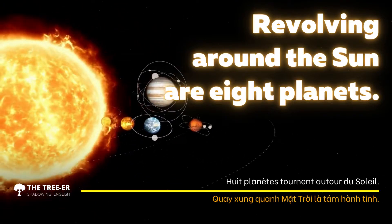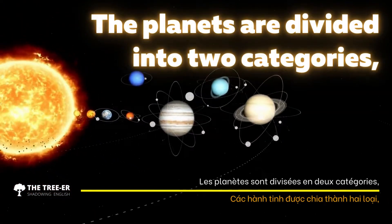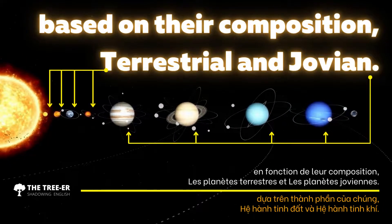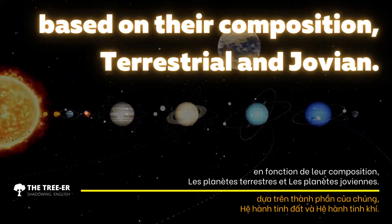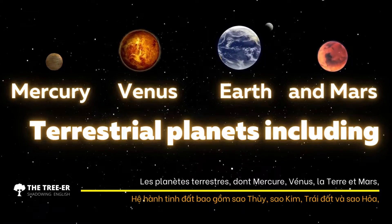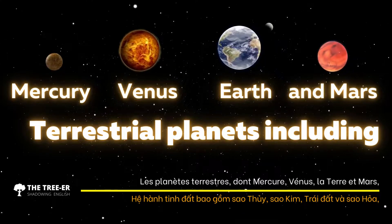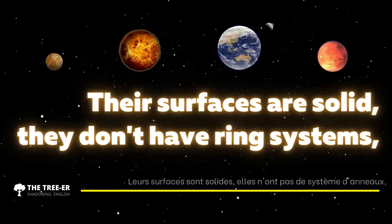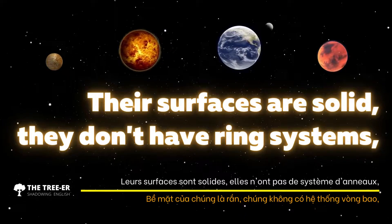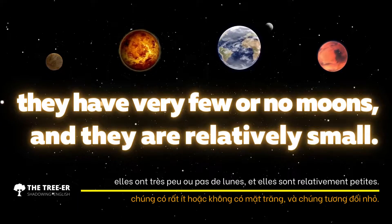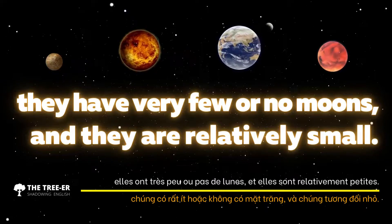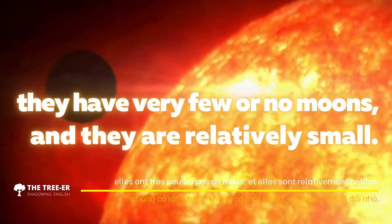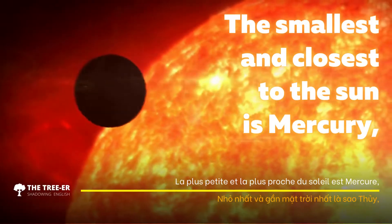Revolving around the Sun are eight planets, divided into two categories based on their composition: terrestrial and Jovian. Terrestrial planets — including Mercury, Venus, Earth, and Mars — are primarily made of rocky material. Their surfaces are solid, they don't have ring systems, they have very few or no moons, and they are relatively small.